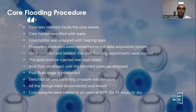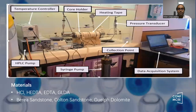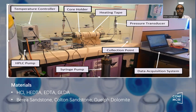Core flooding is one of the main processes which we have to perform during these experiments. It consists of a temperature controller, HPLC pump, syringe pump, collection point, pressure transducer, back-pressure solution system, heating tape, and core holder.